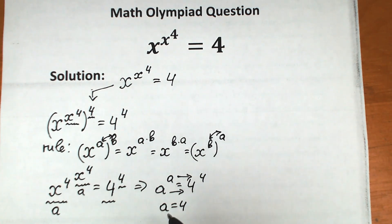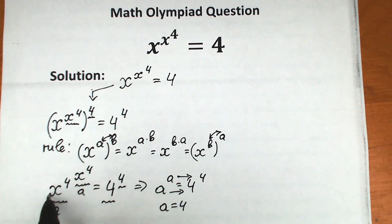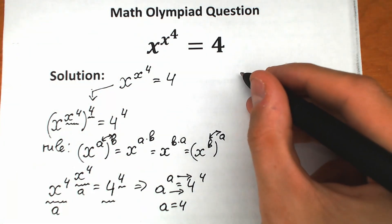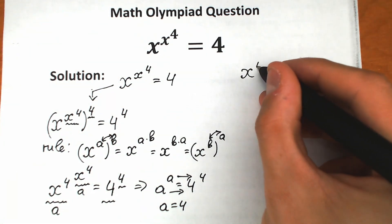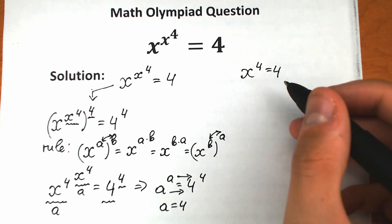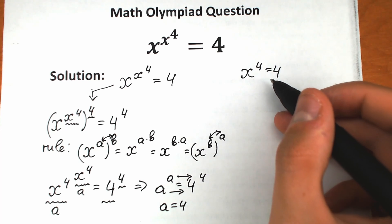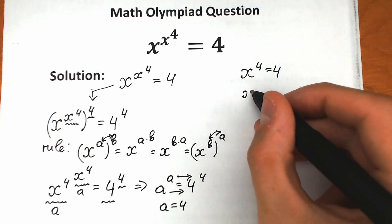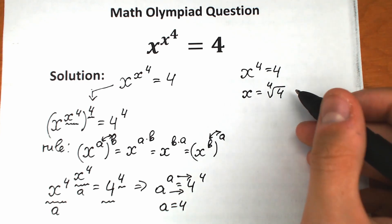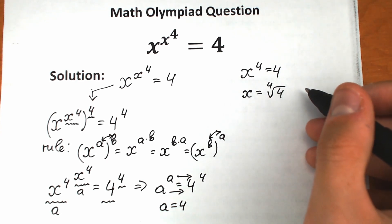Now, since a equals 4 and a was x to the power 4, we have x to the power 4 equal to 4. This is our final equation. Let's find x real quick — take the 4th root on both sides. So x equals the 4th root of 4. This is our solution to this challenge.